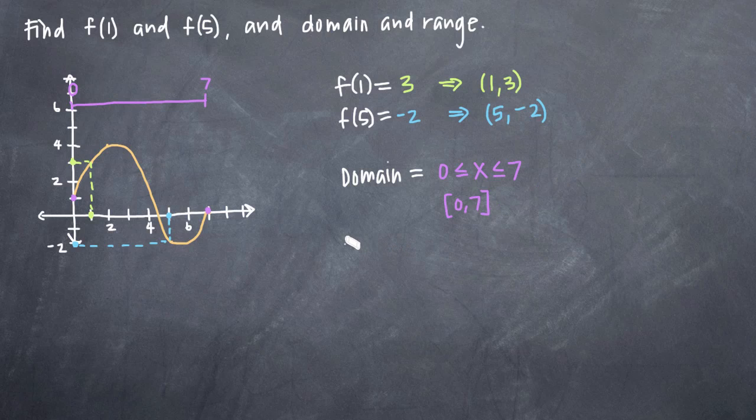Now the range is the corresponding set of y values that the function can attain based on the domain that we've already defined. So on this domain here from 0 to 7, which y values can the function attain? Well, we can see here that the highest y value is at this point here and that the lowest y value is at this point here. So we know that our range runs from this point to this point and that's the range.